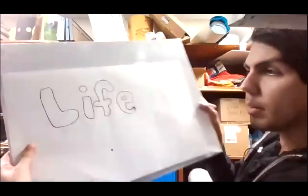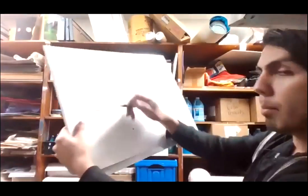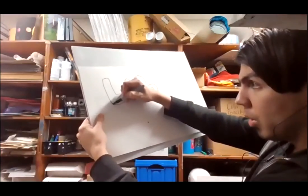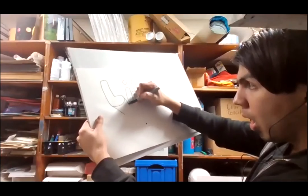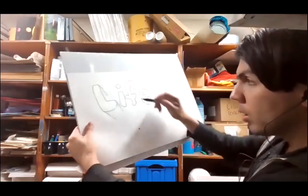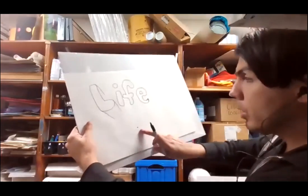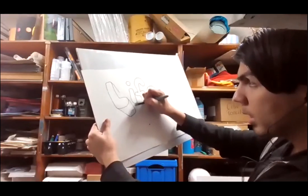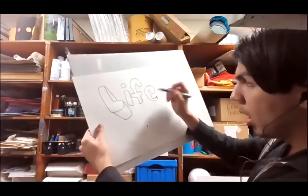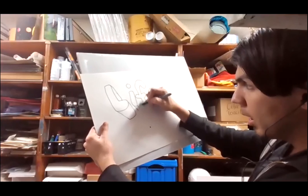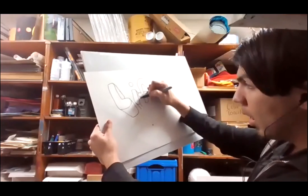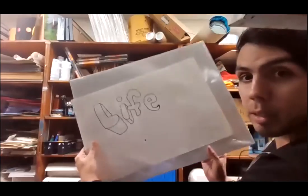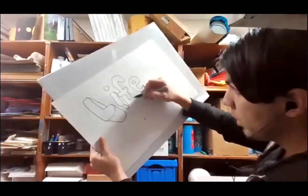So I have the word 'life' and I'm going to connect it to that one point. You see — all the lines are going to that point. Then I am going to close the letters. All the lines are going to this one point.